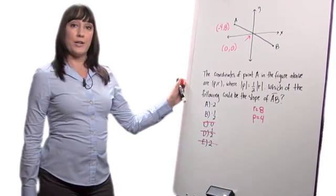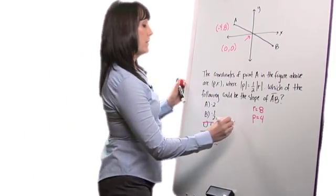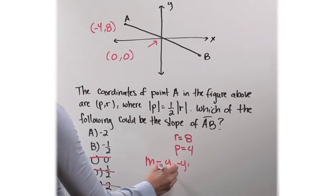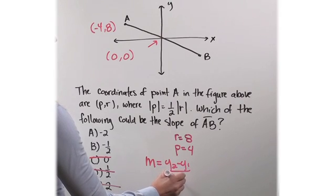And my slope is rise over run. Or, I can write it like this. The difference in y's over the difference in x's.